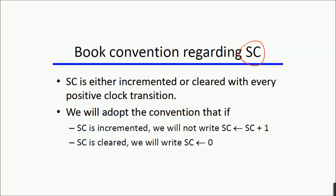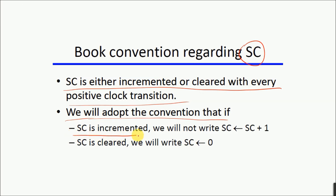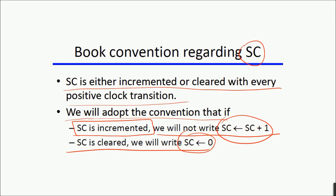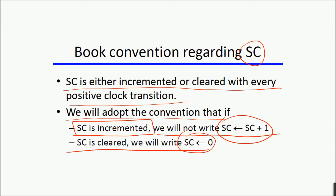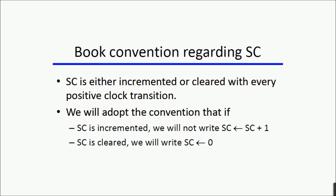The convention followed by the textbook regarding the sequence counter is that it is either incremented or cleared with every positive clock transition. When the sequence counter is incremented we will not write SC = SC+1, but when it is cleared we write SC = 0. This is because the sequence counter increments after every clock pulse automatically, but it is cleared only at the last step of an instruction's execution before the next instruction starts — so it is better to write it just once rather than at each of five or six steps.